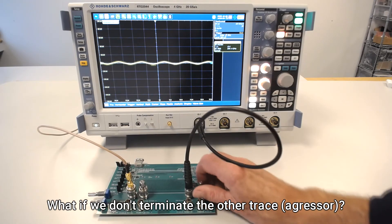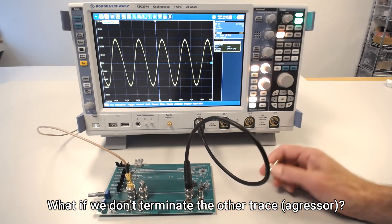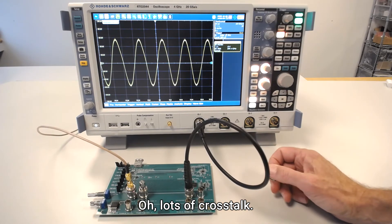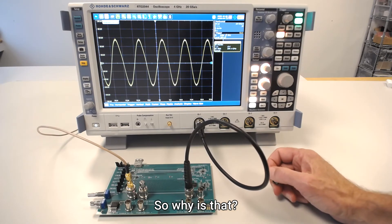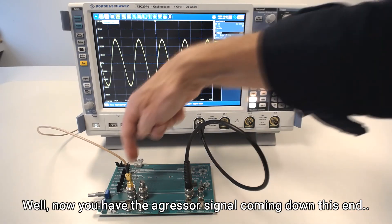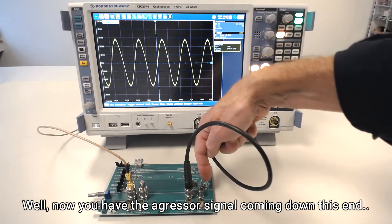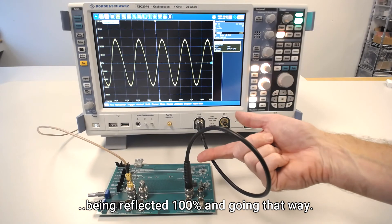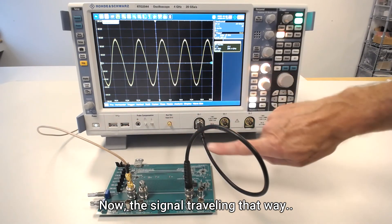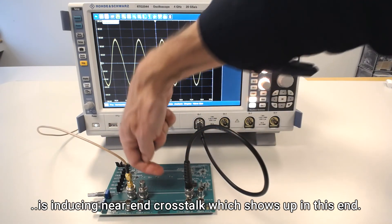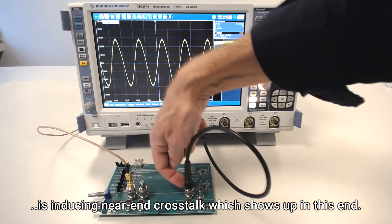What if we don't terminate the other trace? Oh, lots of crosstalk also. So why is that? Well, now you have the aggressor signal coming down this end, being reflected 100% and going that way. Now the signal traveling that way is inducing near-end crosstalk, which shows up in this end.